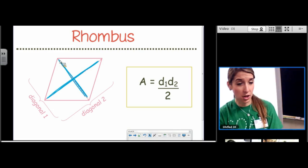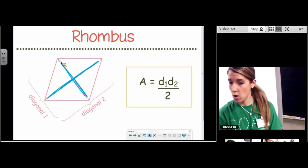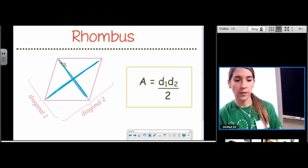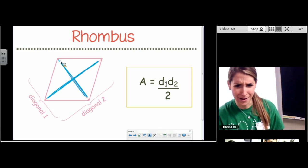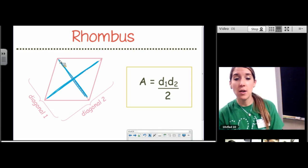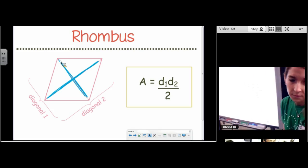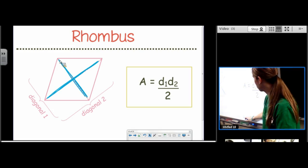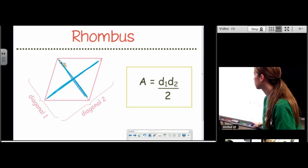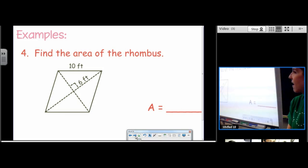Now, in a rhombus, are the diagonals congruent? No. So they're going to be two different values because then it would just be diagonal squared. Anyways, so diagonal 1 times diagonal 2 divided by 2 is how you find the area of a rhombus.